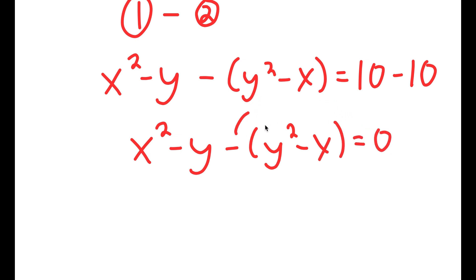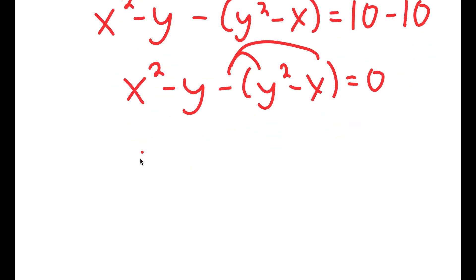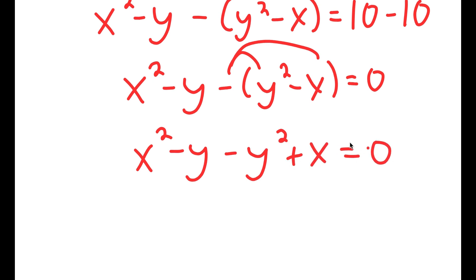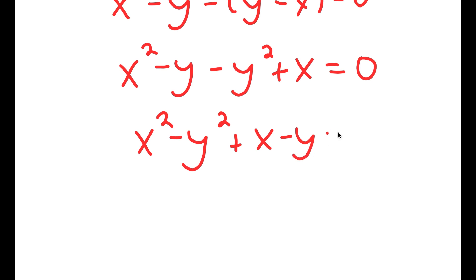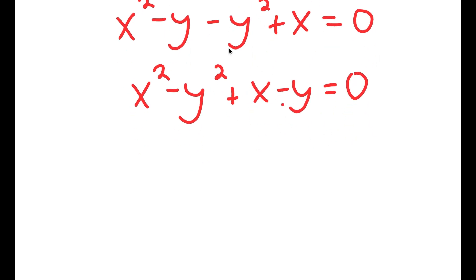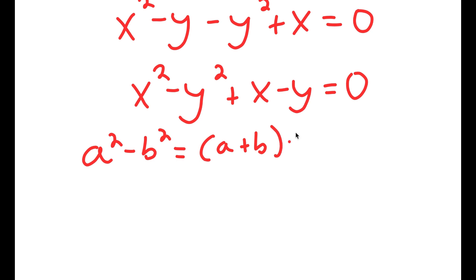Distributing the negative 1, I get x squared minus y minus y squared plus x equals 0. I can rewrite this as x squared minus y squared plus x minus y equals 0. The reason I did this is because something in the form a squared minus b squared equals (a plus b)(a minus b).